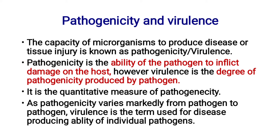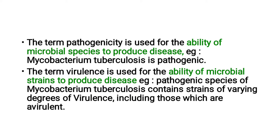Virulence is the degree of pathogenicity produced by the pathogen. Virulence is the term used for the disease-producing ability of individual pathogens, while the term pathogenicity is used for the ability of a microbial species to produce disease.